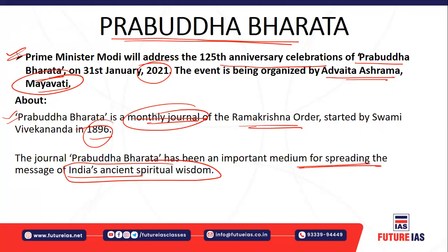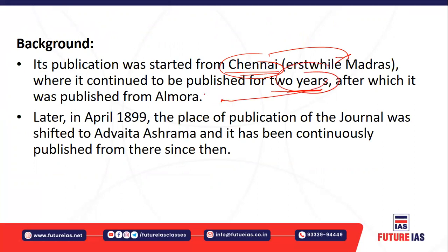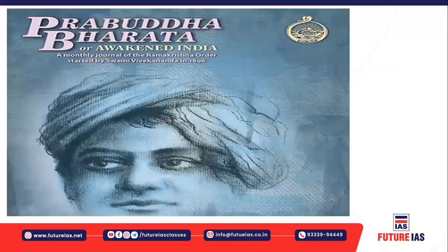Publication of Prabuddha Bharata started from Chennai (then Madras) and continued for two years before shifting to Almora in Uttarakhand. In 1899, the place of publication was again shifted to Advaita Ashram, from where it continues to be published monthly. The first edition was published by Swami Vivekananda in 1896 itself.